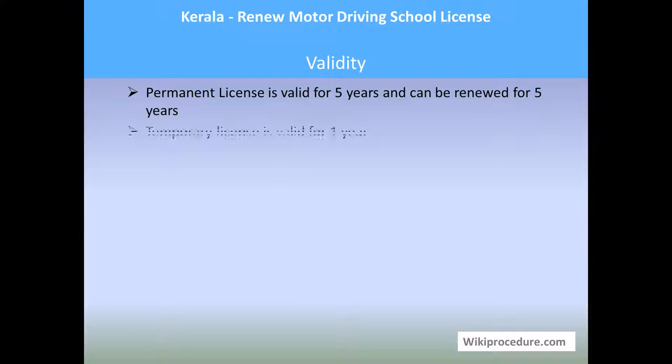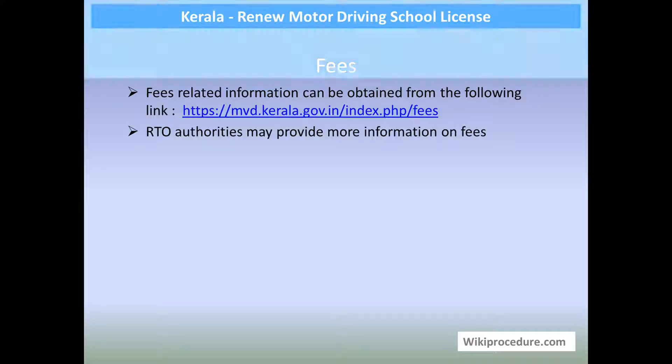Validity: a permanent license is valid for 5 years and can be renewed for 5 years. A temporary license is valid for 1 year.